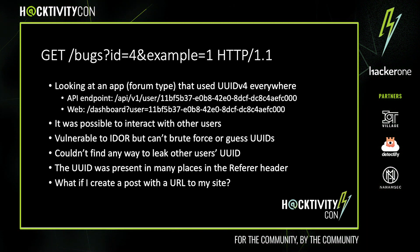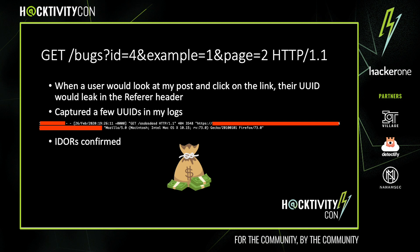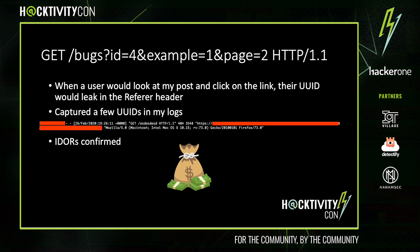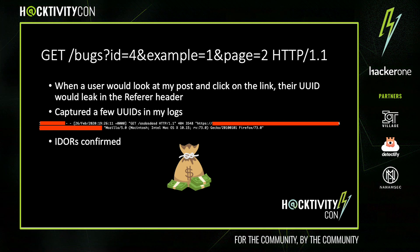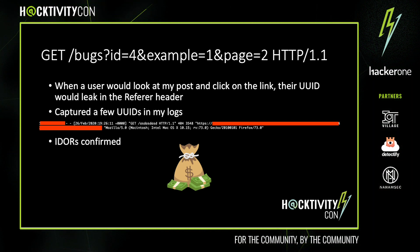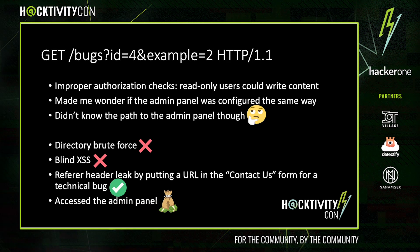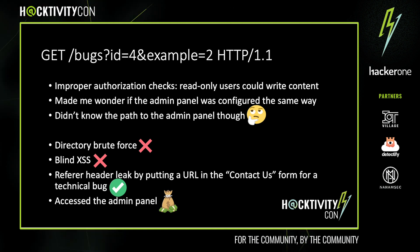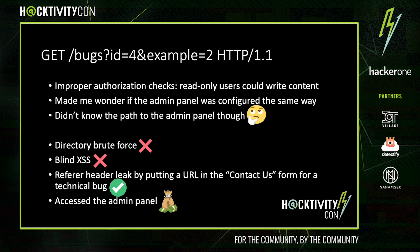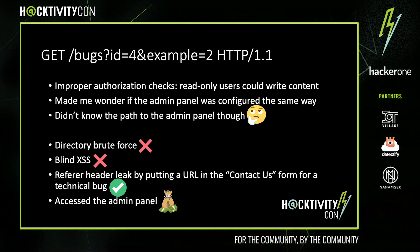Another example bug involving information leaking in the referrer header was a privilege escalation which got me into an admin panel. The app didn't have proper authorization checks in place — read-only users were able to escalate privileges and write content to the site. So this made me wonder whether the admin panel was configured in the same way. But I didn't know the path to the admin panel. I tried directory brute forcing to find it and put a few blind XSS payloads in strategic places like the contact us form, but none of it worked. So then I thought, what if I just send a link in the contact us form? An admin clicked on my link and the admin endpoint path was leaked in the referrer header. And indeed, this gave me direct access to the admin panel. The path was quite random — it would have probably taken me quite a long time to guess or brute force.